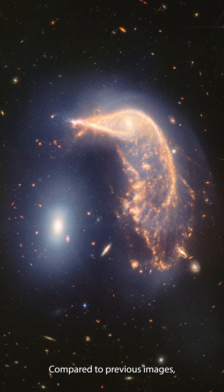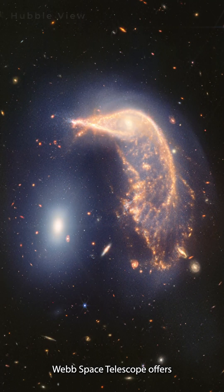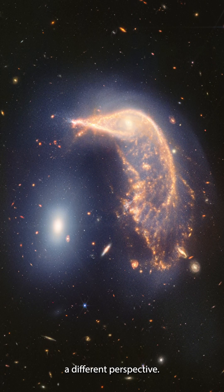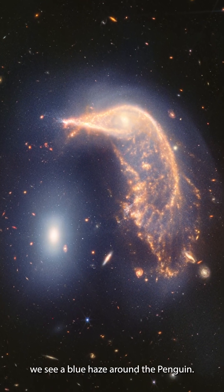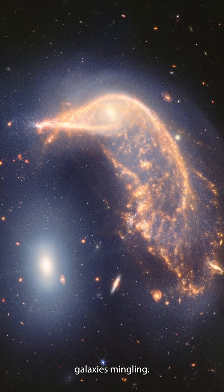Compared to previous images like this one from the Hubble Space Telescope, this new view from the Webb Space Telescope offers a different perspective. In this image, we see a blue haze around the Penguin. The haze is a result of the two galaxies mingling.